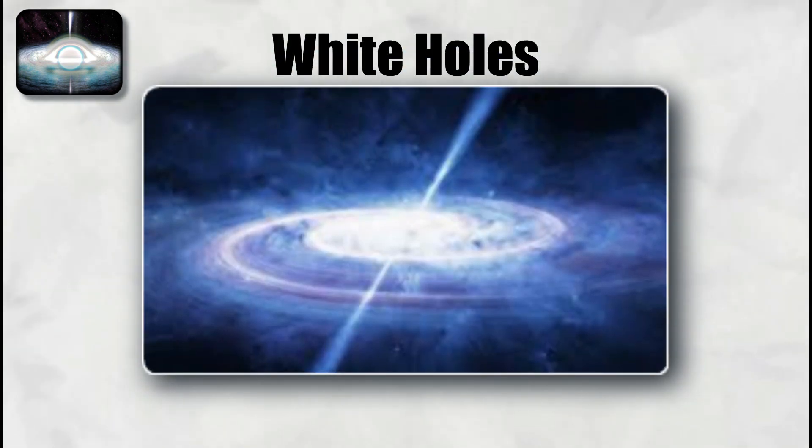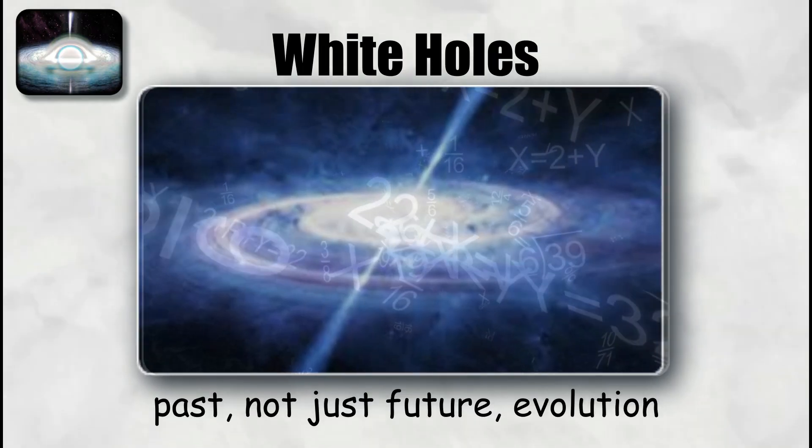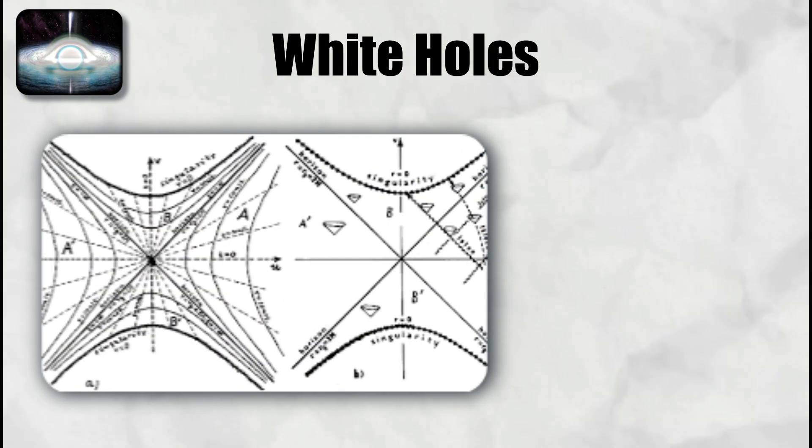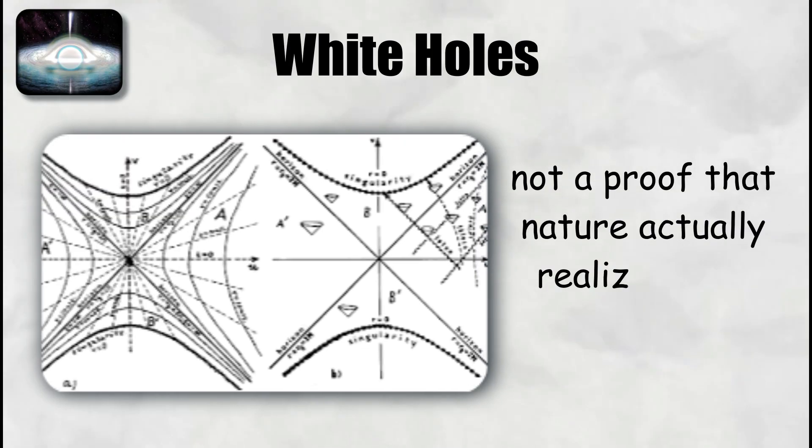The white hole region appears when you extend the mathematics to include past, not just future, evolution. This is a statement about allowed geometries in the theory, not a proof that nature actually realizes them.